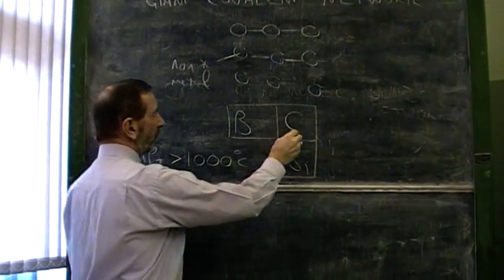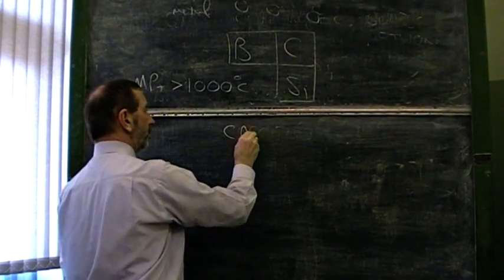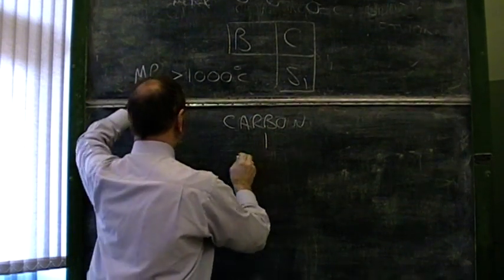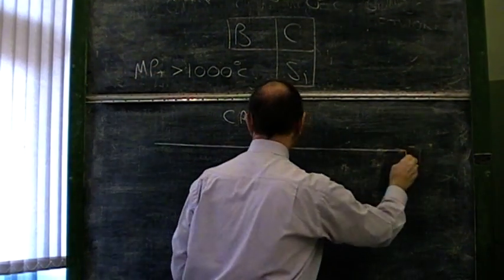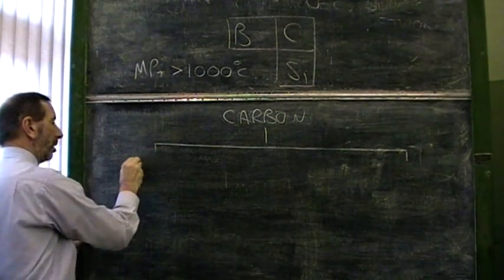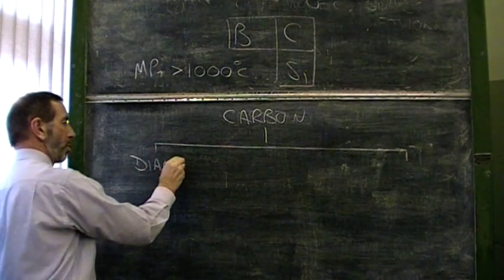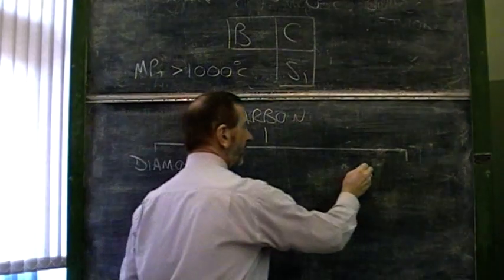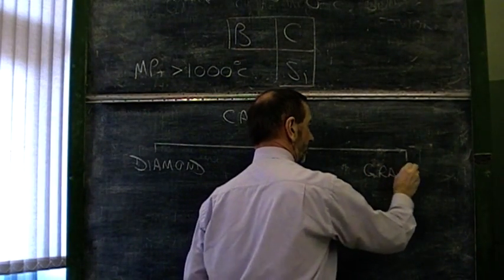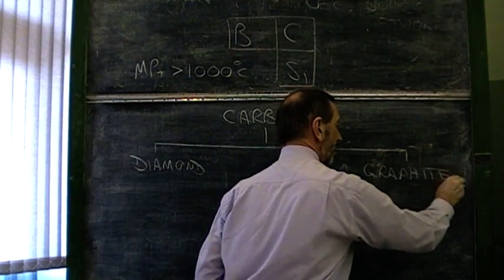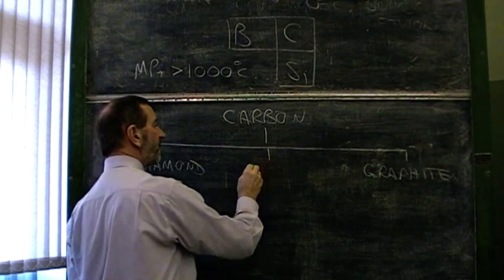Now, the one we tend to focus on is carbon. Carbon comes in three forms. There's diamond, there's graphite, and what tends to be forgotten about, which is fullerene.